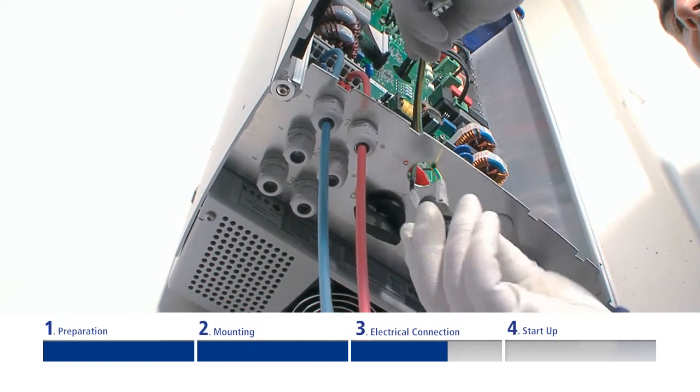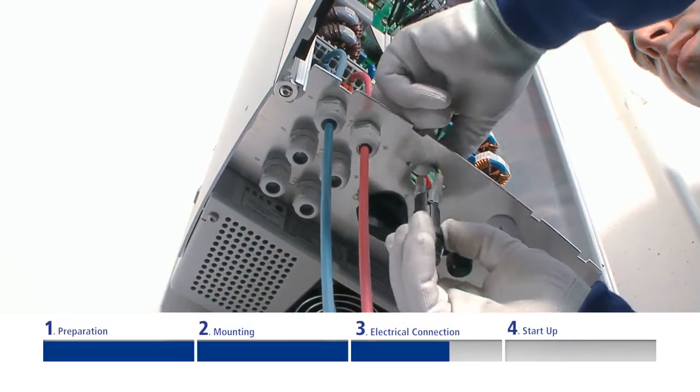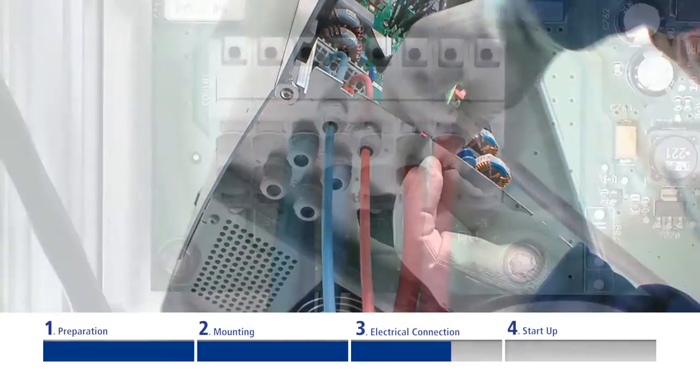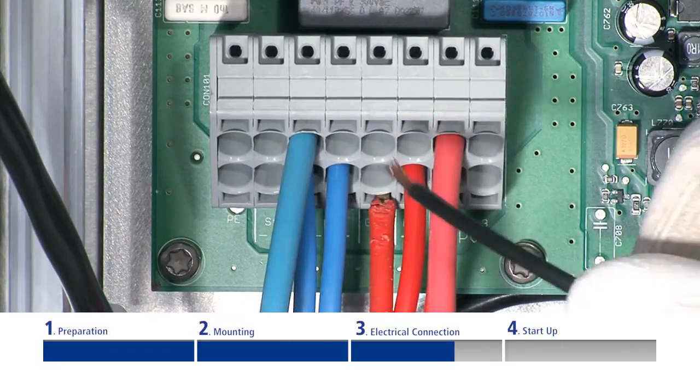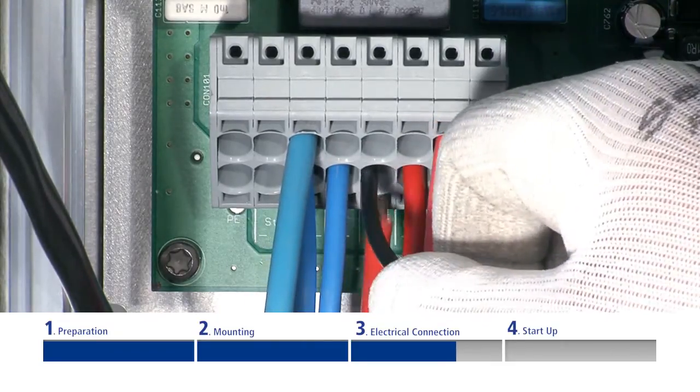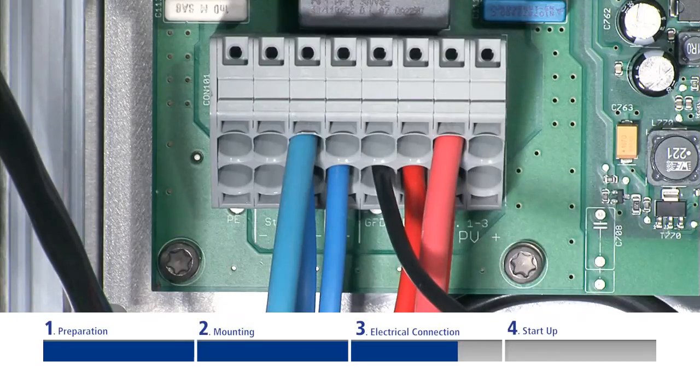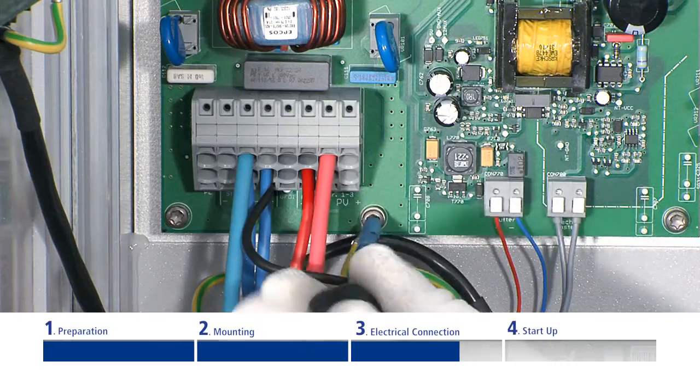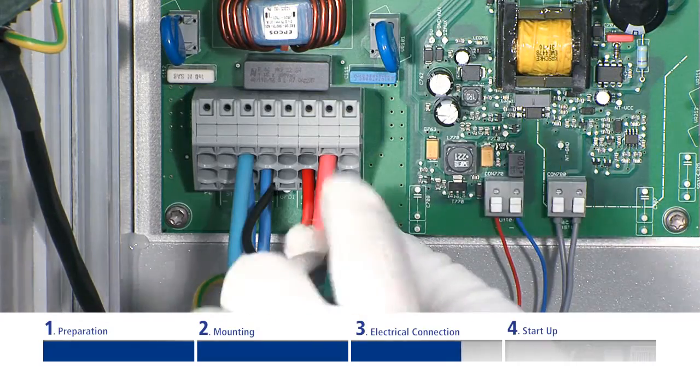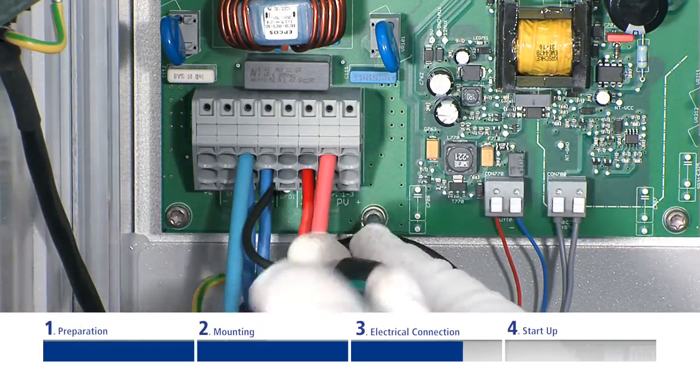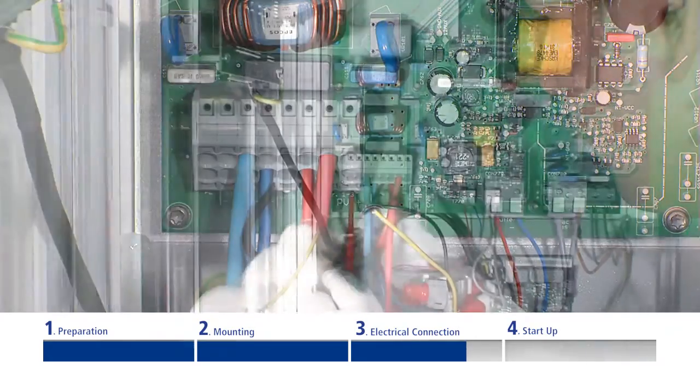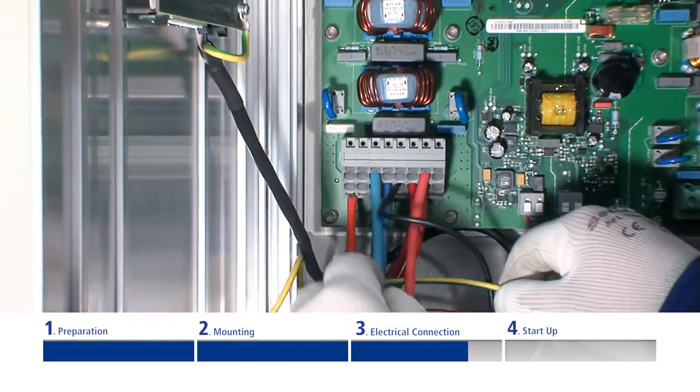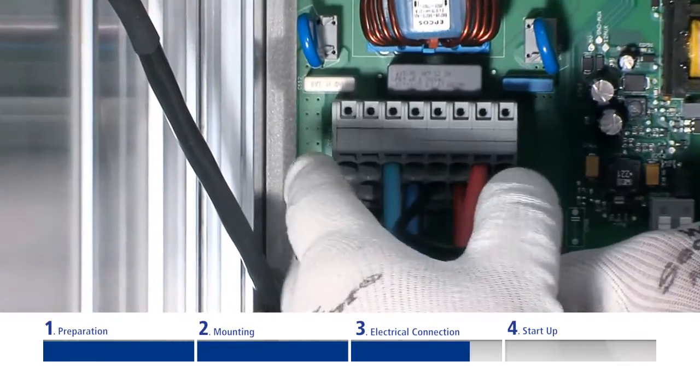Use a screwdriver to remove the cover of the fuse holder and attach the fuse holder using the screws provided. Connect the black cable to the bottom DC terminal labeled GFDI. Attach the PE cable, green-yellow, to the corresponding PCB fitting using the cable shoe or depending on the model directly into the PE terminal on the PCB board.